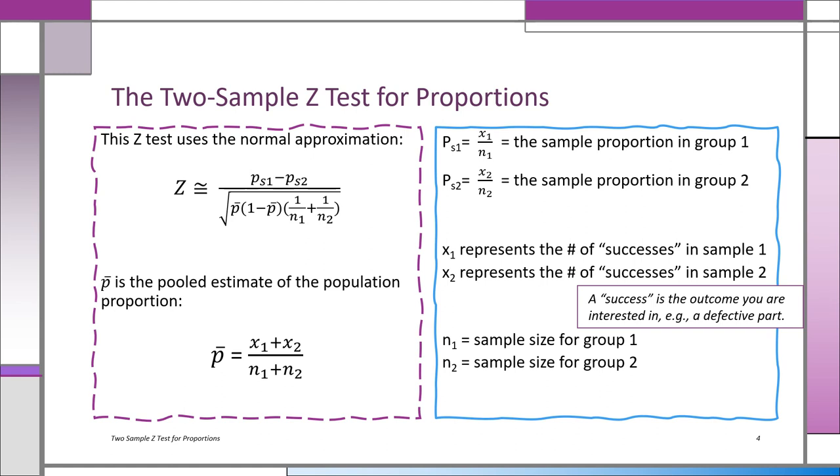If you combine both the groups together, you get the pooled proportion by taking x1 plus x2 and then in the denominator n1 plus n2, and that gives you the pooled estimate of the population proportion for the groups.